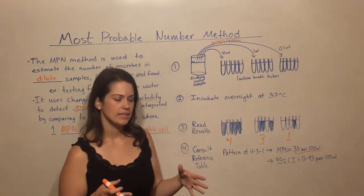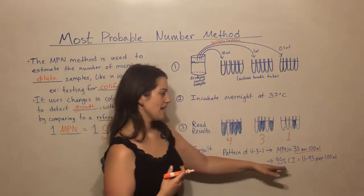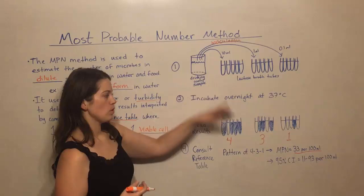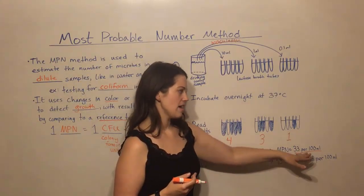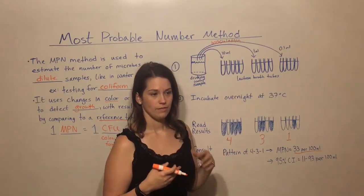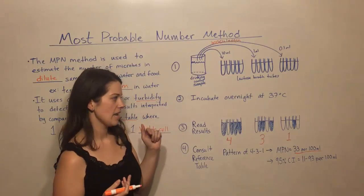And all this means is that whereas 33 is like the best guess, the most statistically supported guess, you can be 95% confident that in this water sample that gave this pattern, there is somewhere between 11 and 93 viable coliform bacteria per 100 mils of this sample.